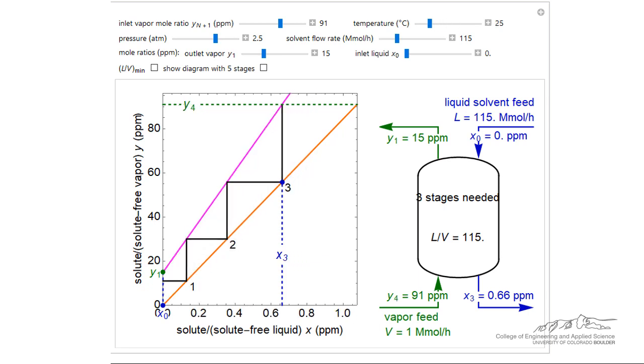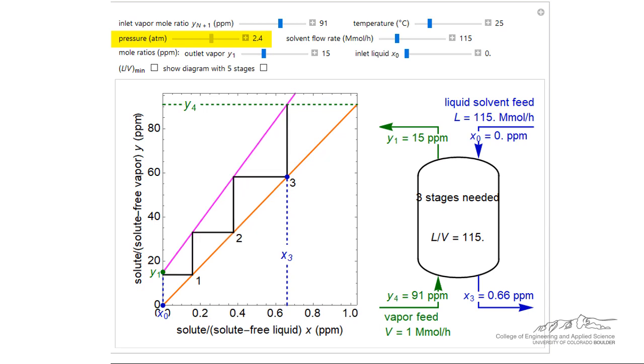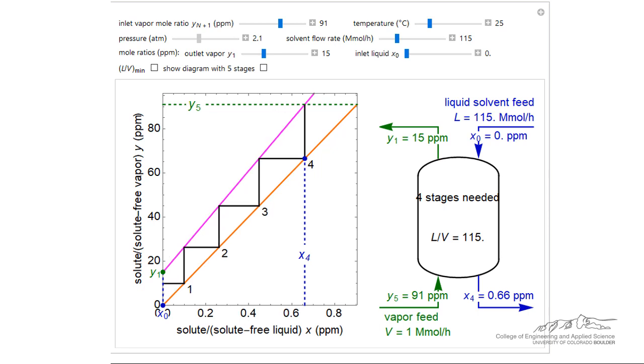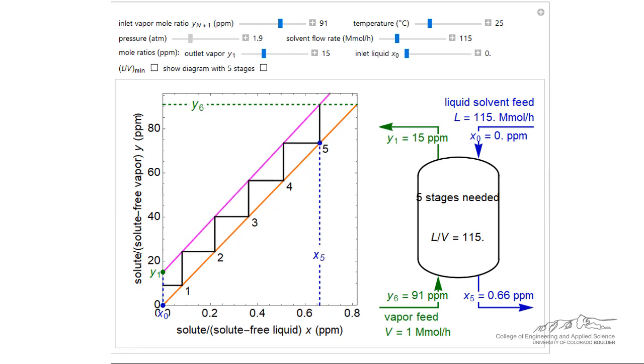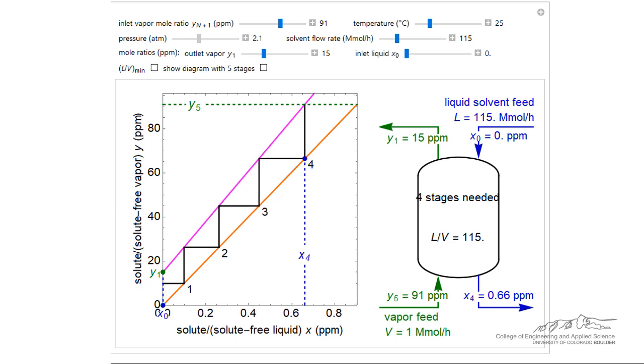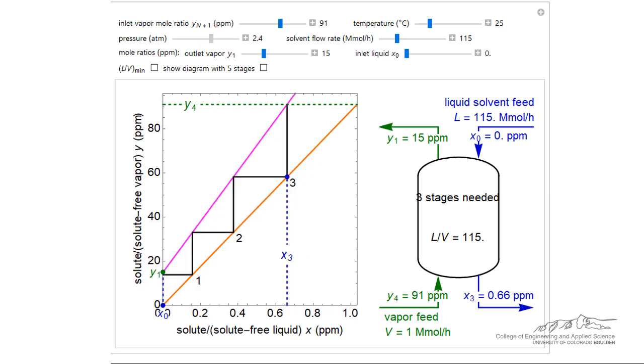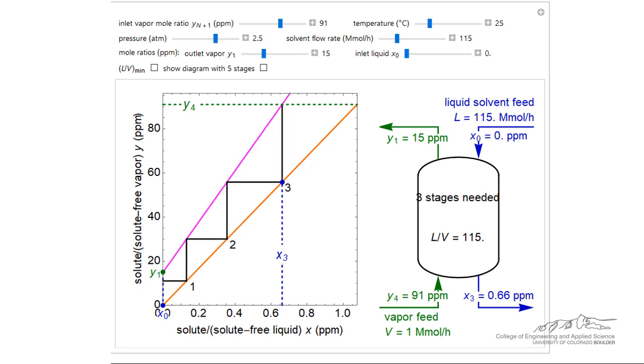Next, we will investigate the impact of column pressure. Varying the pressure will also change the equilibrium line. As the pressure is lowered, the equilibrium line moves closer to the operating line. As the pressure is increased, the slope of the operating line decreases, opening up space between the operating line and the equilibrium line. This results in fewer stages for a given separation.